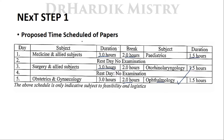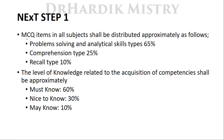In NExT Step 1, MCQ items in all subjects shall be distributed approximately as follows: 65% will be problem-solving and analytical skill types, 25% will be comprehension type, and 10% will be recall type. Regarding knowledge level, approximately 60% will be 'must know' type questions, 30% will be 'nice to know' type, and 10% will be 'may know' type — the toughest questions — comprising around 10% of all papers.